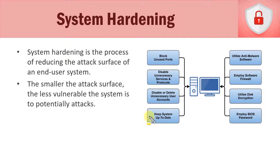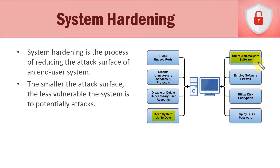We need to make sure our systems are kept up to date with a patching policy so end-user systems are patched on a regular basis. We also need to utilize anti-malware software. Many organizations call it anti-virus software, but because there are so many types of malware beyond just viruses — worms, trojan horses, and so forth — it's really anti-malware software that protects against all of these threats.